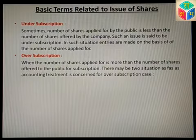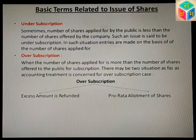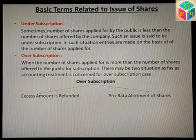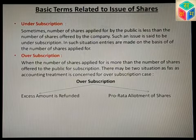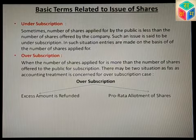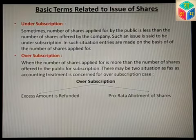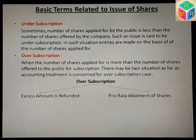There are two accounting treatments for over subscription. First, the excess amount is refunded. Second, pro-rata allotment of shares is done. In pro-rata allotment, the excess application money received is not refunded immediately but is adjusted against future calls. The extra 50,000 shares' money is adjusted going forward. We will discuss practical questions on this ahead.